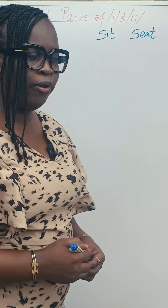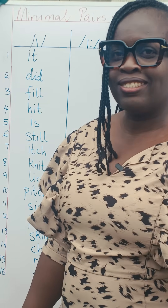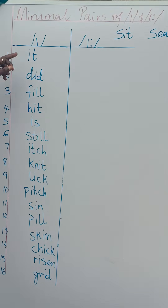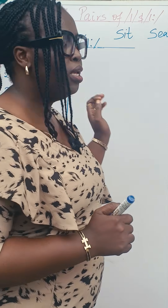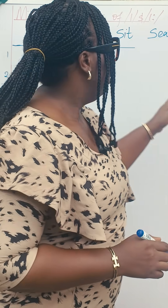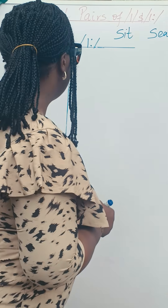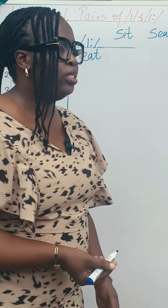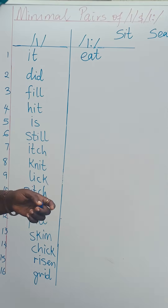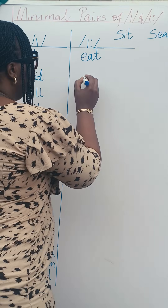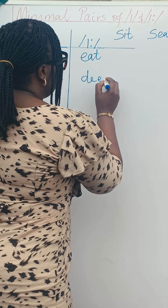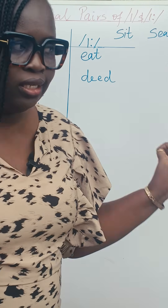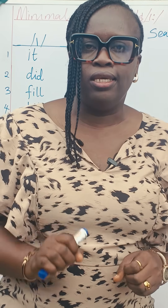Now let's look at more of the pairs. Let's quickly look at the minimal pairs on the board. We have: I-T — it — and the longer version is going to be eat, E-A-T, as you're eating your food. Next: did, D-I-D, and we are going to have deed, D-E-E-D.